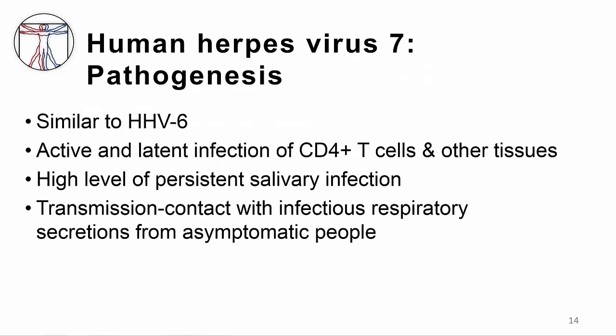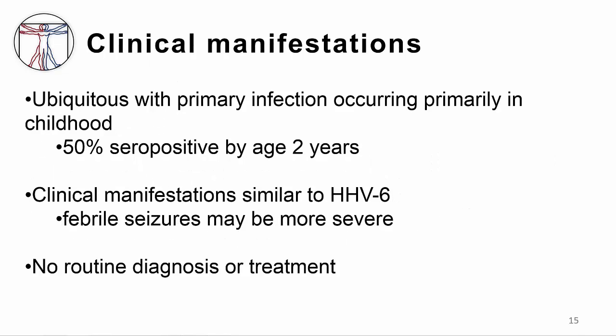Turning to HHV7, it is very similar to HHV6. It has both active and latent infections of CD4 T cells and latent infection of many other tissues, including the skin, lungs, and kidneys. There is a high level of persistent salivary infection like HHV6, and transmission is by contact with respiratory secretions containing HHV7 DNA from asymptomatic contacts. Like HHV6, this is a very common virus, but acquisition is later than HHV6. Only 50% of children are seropositive by age 2, in contrast to 70% seropositivity at the same age for HHV6. The clinical manifestations are similar to HHV6, but if febrile seizures occur, they may be longer or more severe. We do not routinely diagnose or treat this infection because HHV6 causes the majority of disease in immunocompromised patients.